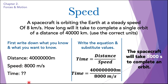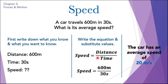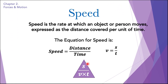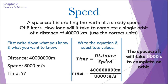The question asks for time, so we write down what we know and what we want to find. We rearrange the equation: time = distance/speed. Using the triangle, when we hide time we get distance upon speed. Substituting the values and dividing, the spacecraft will take 5000 seconds to complete one orbit. This is how we use the equation to solve questions.